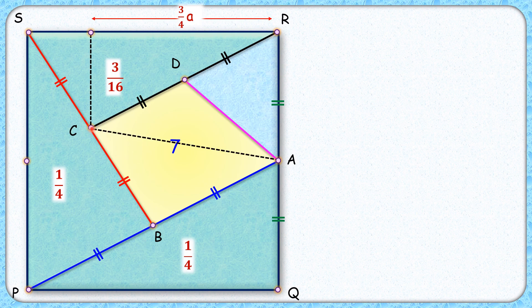Now let's join point C with point A. Here A is the midpoint, so RA is A by 2. Now area of this triangle CRA, that's half of base into height. So this is 3 by 16th of the full square.